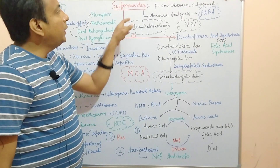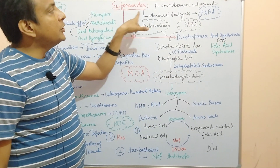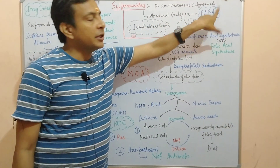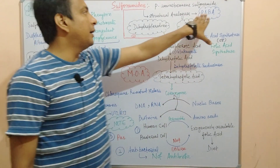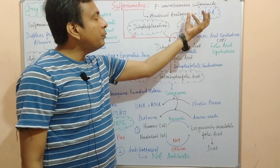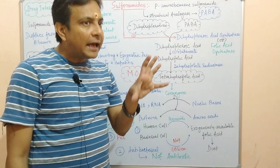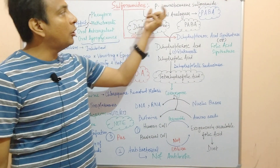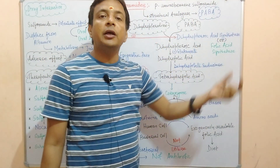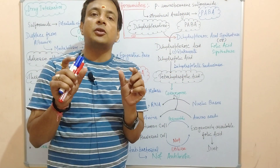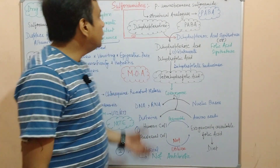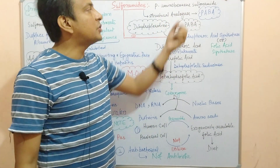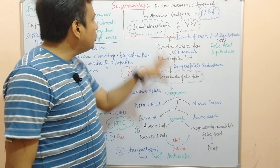Sulfonamides are structural analogs of para-aminobenzoic acid. What is para-aminobenzoic acid? Para-aminobenzoic acid is a structural analog. If you look at sulfonamides and para-aminobenzoic acid, you will find similarities in both structures. This is why we explain this point.